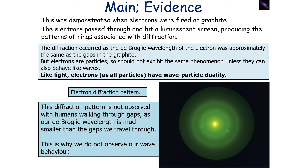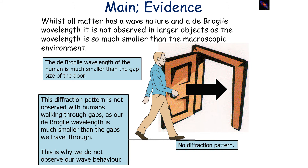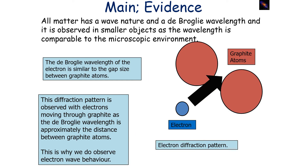This diffraction pattern is not observed when humans walk through gaps, as our de Broglie wavelength is much smaller than the gaps we travel through, which is why we don't observe our wave behaviour. Whilst all matter has a wave nature and a de Broglie wavelength, it's not observed in larger objects as the de Broglie wavelength is much smaller than the macroscopic environment they exist in. However, matter's wave properties are more easily observed in a microscopic environment, where the de Broglie wavelength is comparable to the gap size — for example, an electron has a de Broglie wavelength of similar size to the gaps between graphite atoms.